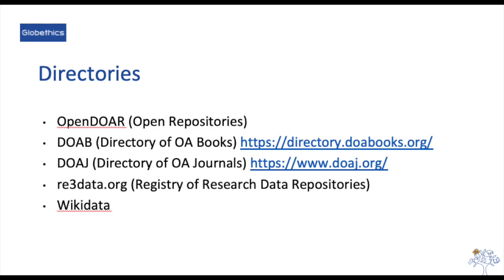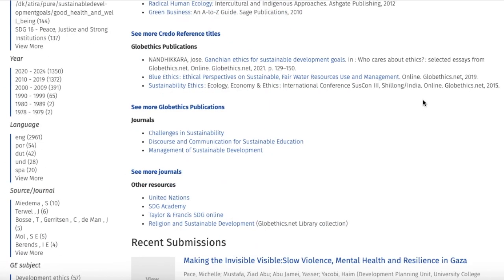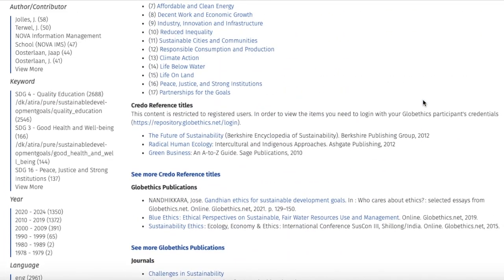You may also continue by exploring directories such as OpenDOAR (Open Repositories), DOAB (Directory of Open Access Books), DOAJ (Directory of Open Access Journals), Registry of Research Data Repositories, or Wikidata — which are rich resources that you can explore. But let us have a look at other resources in the Ethics and Sustainable Development Collection.